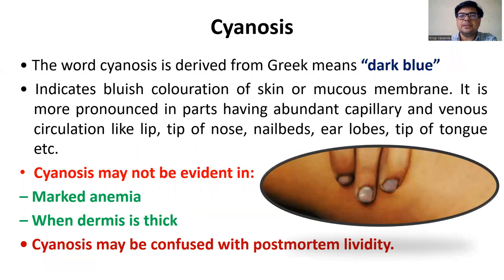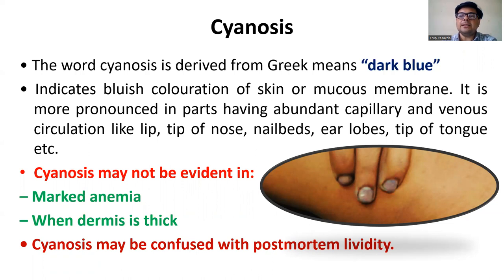So let us see the first one, that is cyanosis. The word cyanosis is derived from Greek meaning dark blue. It indicates bluish discoloration of skin or mucous membrane. It is more pronounced in parts having abundant capillaries and venous circulation, like lips, tip of nose, nail beds, earlobes, tip of tongue, etc.